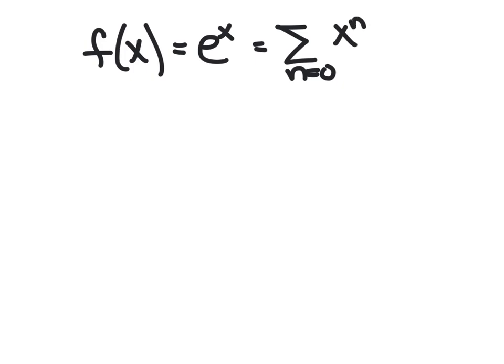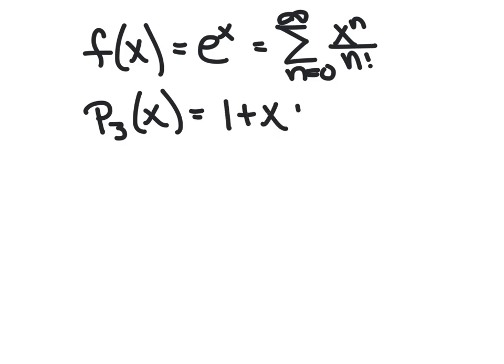As an example here, let's say we had some function named f(x), and it was just e^x. We know as a power series starting at n equals 0, that would be x^n divided by n factorial to infinity. Maybe we created a third degree polynomial that we wanted to use to approximate e^x. So the third degree polynomial would be 1 plus x plus x squared over 2 factorial plus x cubed over 3 factorial. We wouldn't worry about any of the other terms because we were limiting ourselves to a finite number of terms.